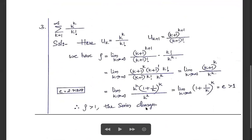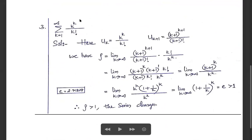Moving on to the next problem: Σ (k=1 to ∞) k^k / k!. Here u_k = k^k / k! and u_{k+1} = (k+1)^{k+1} / (k+1)!.